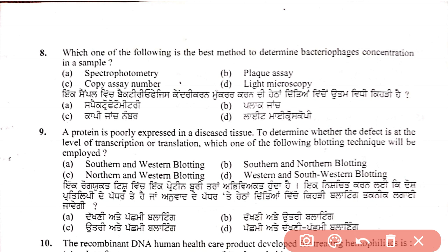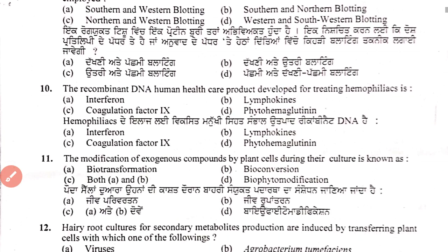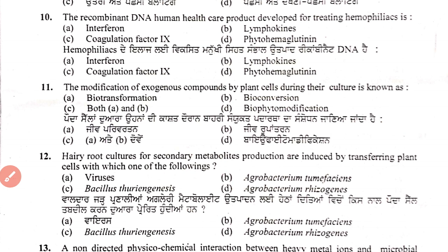Tenth question: which recombinant DNA human healthcare product is developed for treating hemophilia? Hemophilia is a disease related to blood clotting. Using recombinant DNA technique, the answer is coagulation factor.